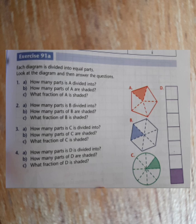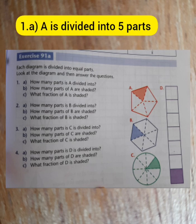So let's do the first one together. How many pieces are there altogether? There's one, two, three, four, five. So the answer to A is there are five, or A is divided into five parts.